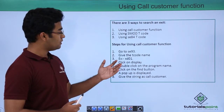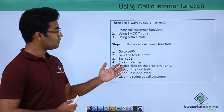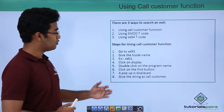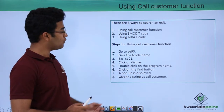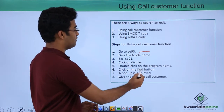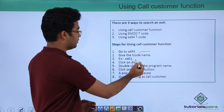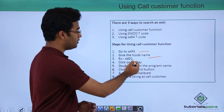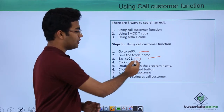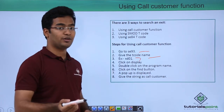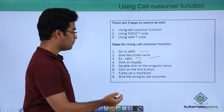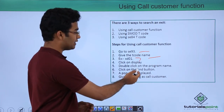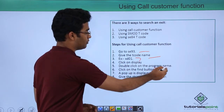Let us see the steps for using Call Customer Function. First, we have to go to SE93 transaction code and give the transaction code name. Suppose we are giving XD01, then we click on Display, and then double-click on the program name.